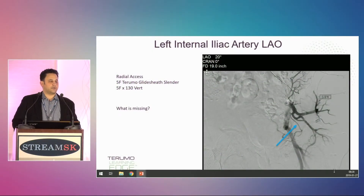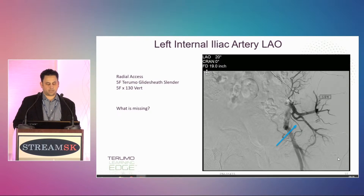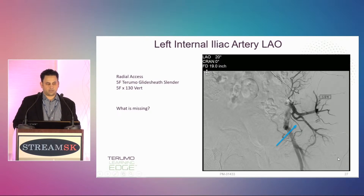Case number two is another radial case. I used a five French Glide sheath slender and a five French 130 centimeter vertebral catheter.